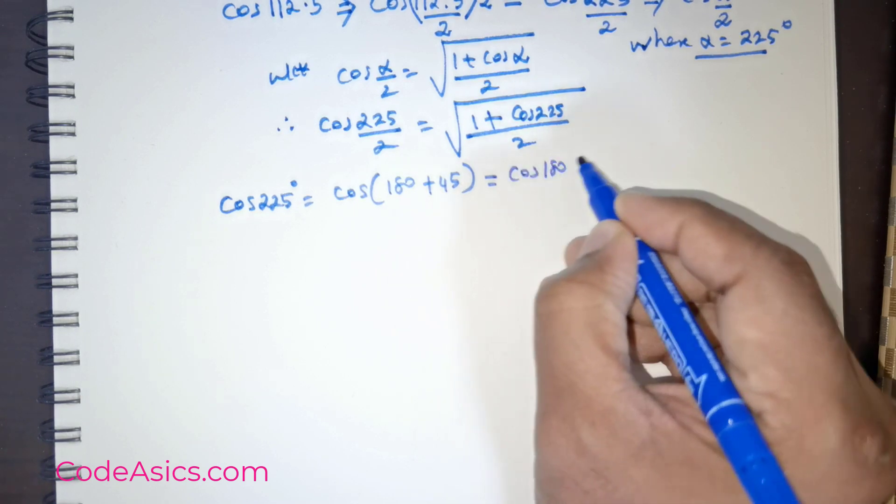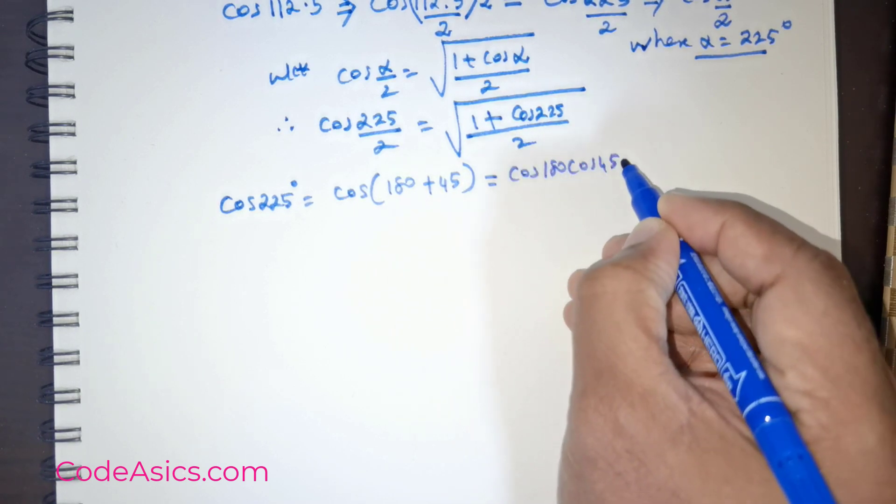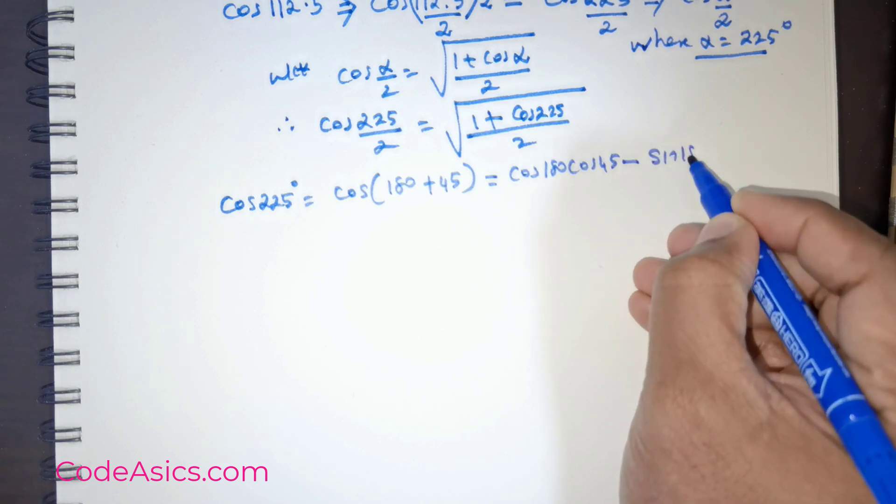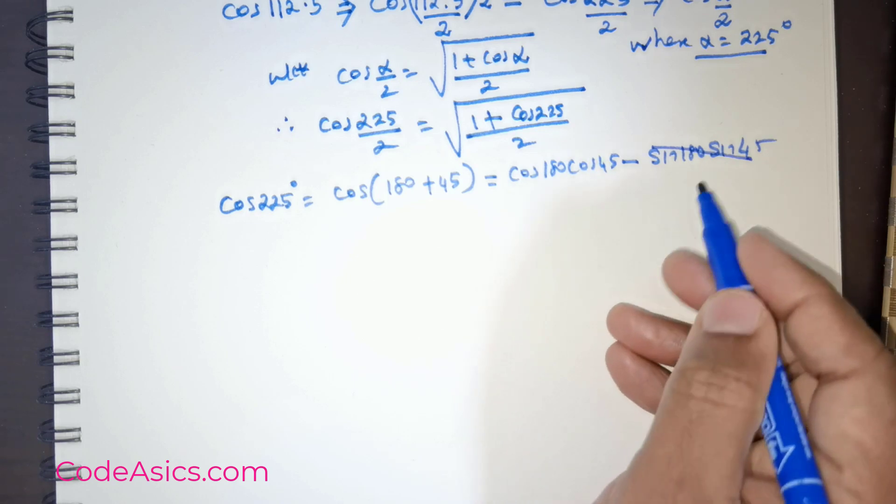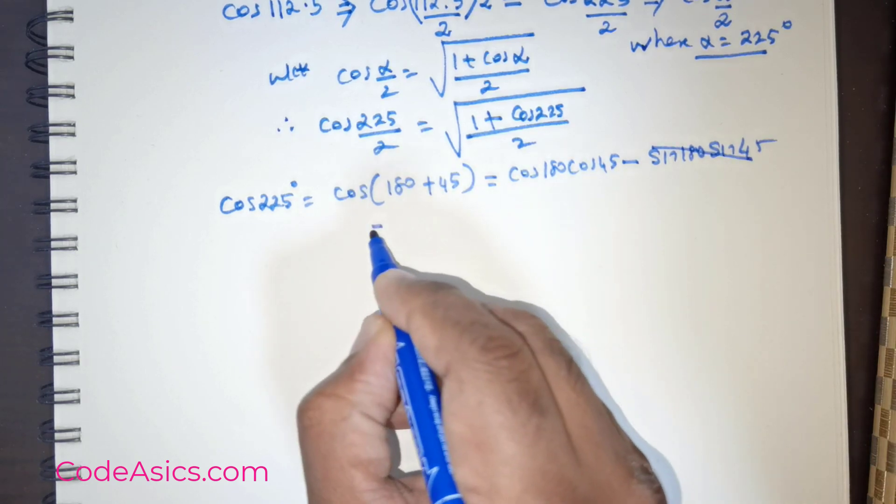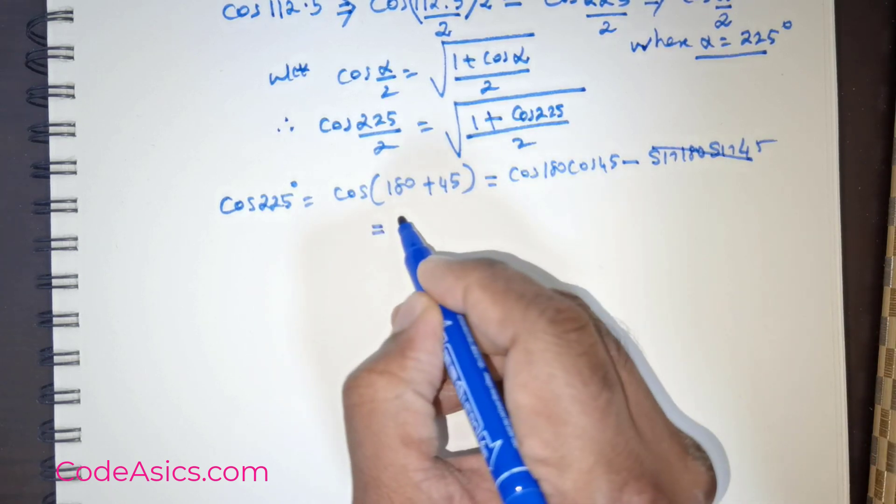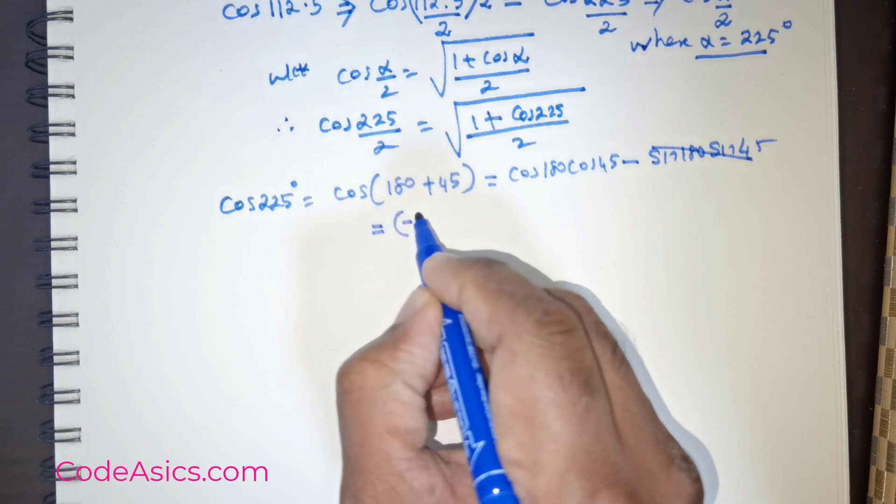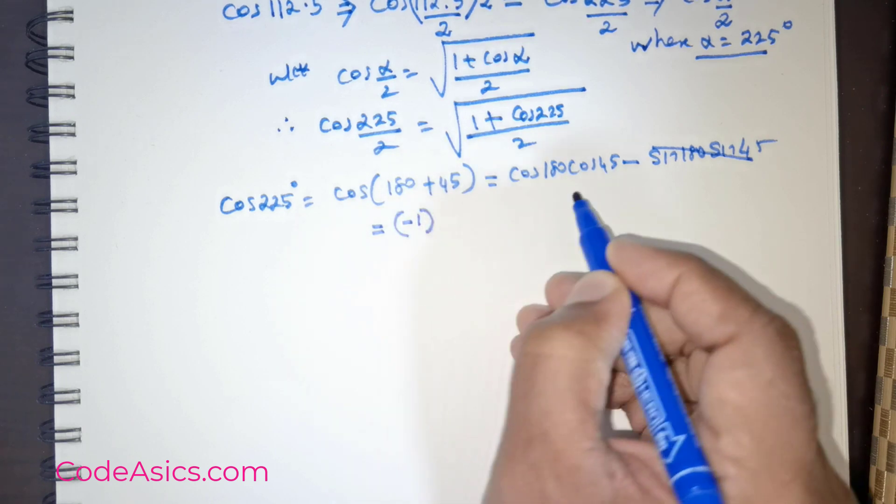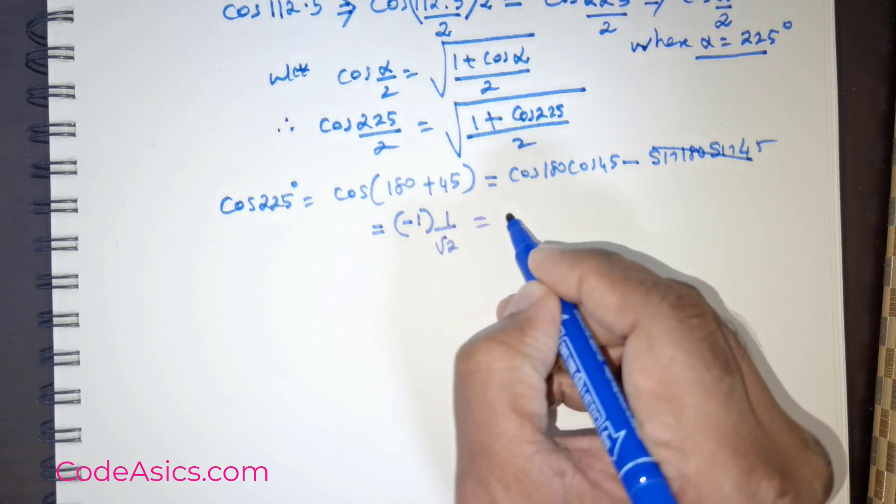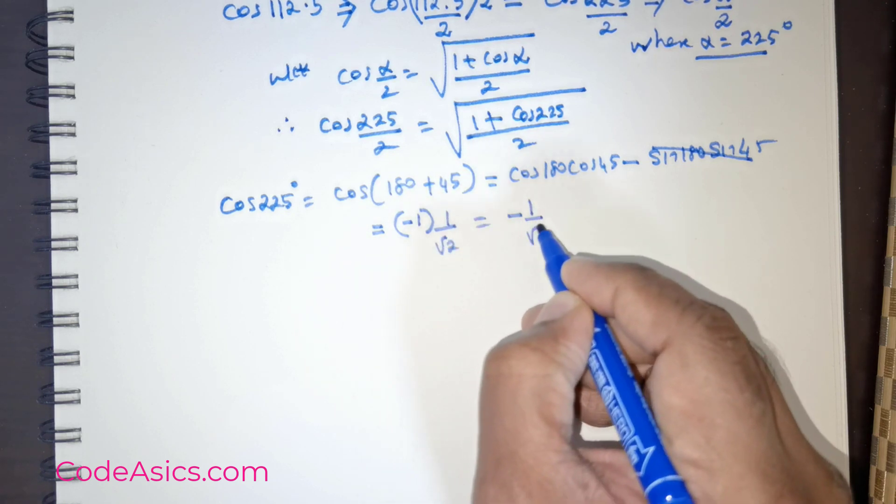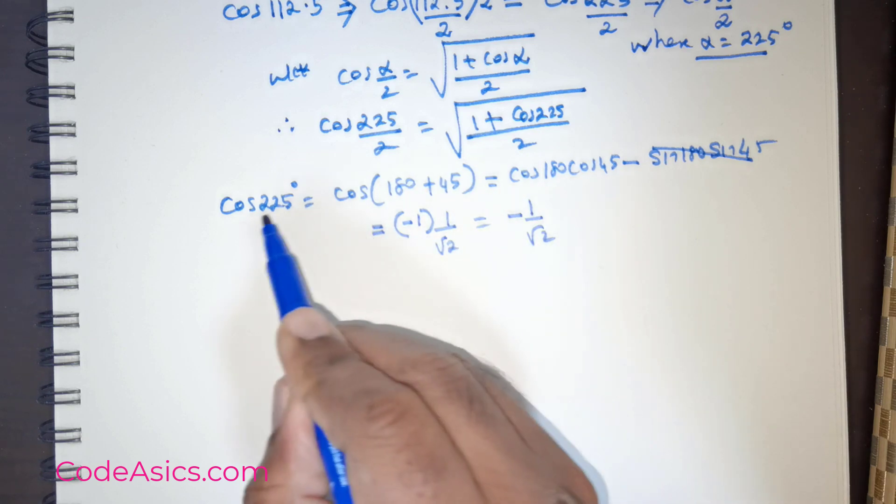That is nothing but cos 180 times cos 45 minus sine 180 times sine 45. Sine 180 equals 0, so there is no point in keeping that. All we have is cos 180 times cos 45. Cos 180 is negative 1 and cos 45 is 1 over root 2. So we got a value of negative 1 over root 2 for cos 225 degrees.